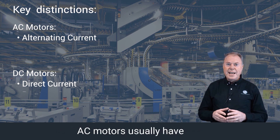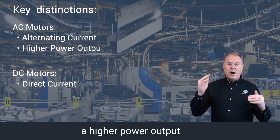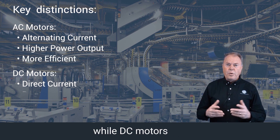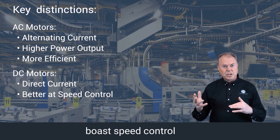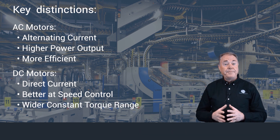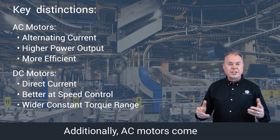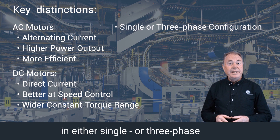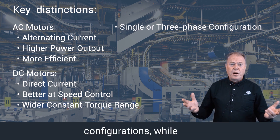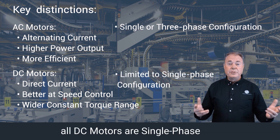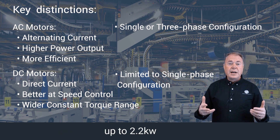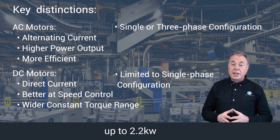AC motors usually have a higher power output and are more efficient, while DC motors boast speed control and a wider constant torque range. Additionally, AC motors come in either single or three phase configurations, while all DC motors are single phase, up to the smaller kilowatt ranges up to 2.2 kilowatt.